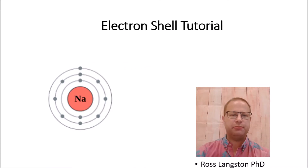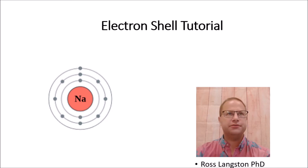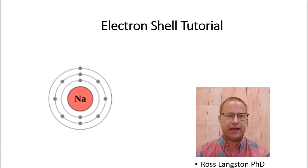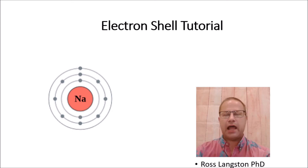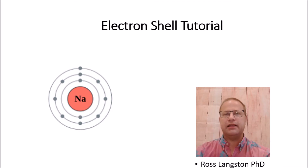I'm Ross Langston and today we're going to go through a simple tutorial of electron shell configurations. This tutorial is intended for students in basic biology classes such as biology 100 or human anatomy and physiology — not really intended for chemistry students. You're going to learn how to determine how many electrons go into each shell, what the electron shell configuration will look like, and whether or not an atom of a particular element is likely to form molecules or compounds.